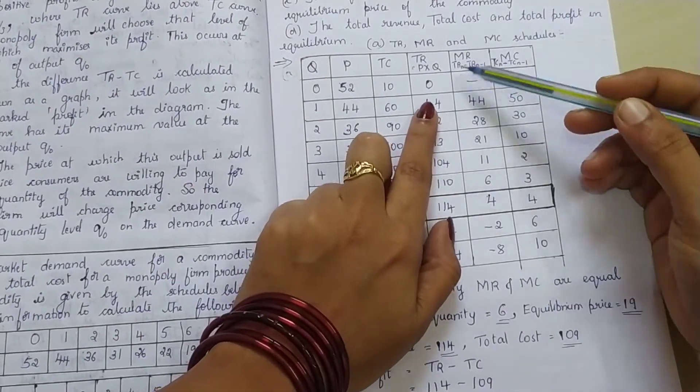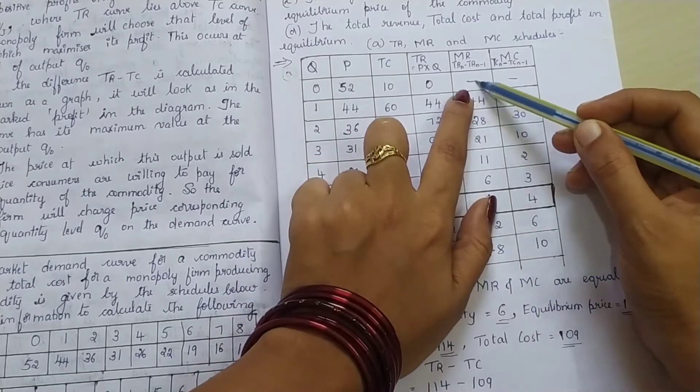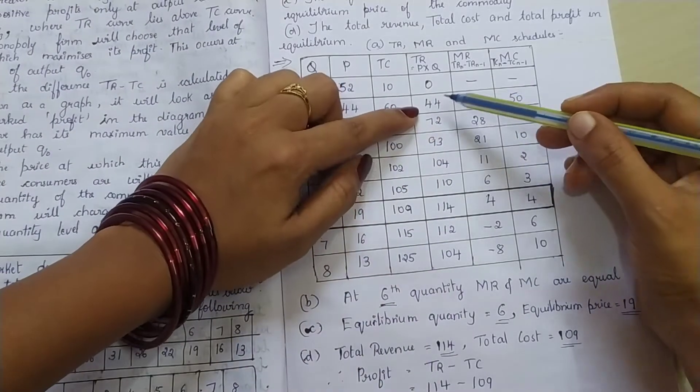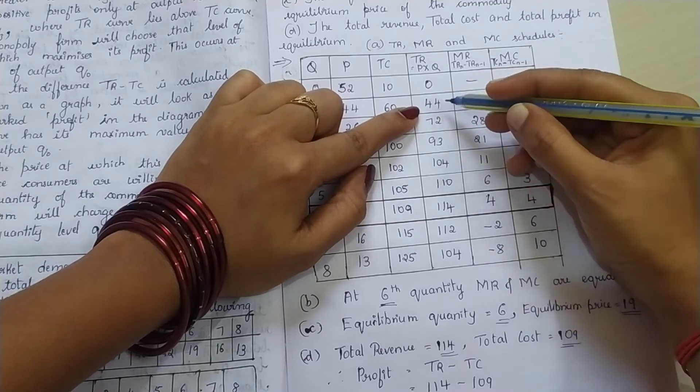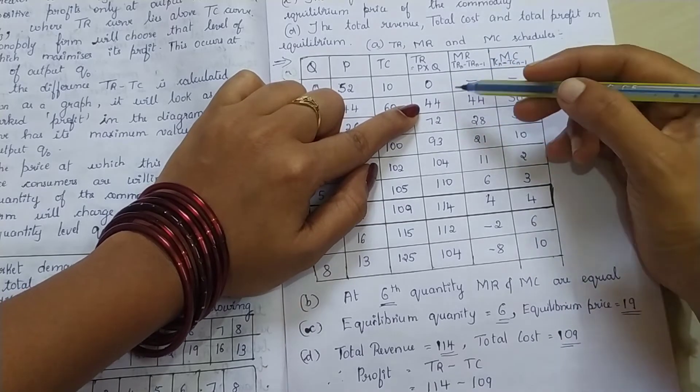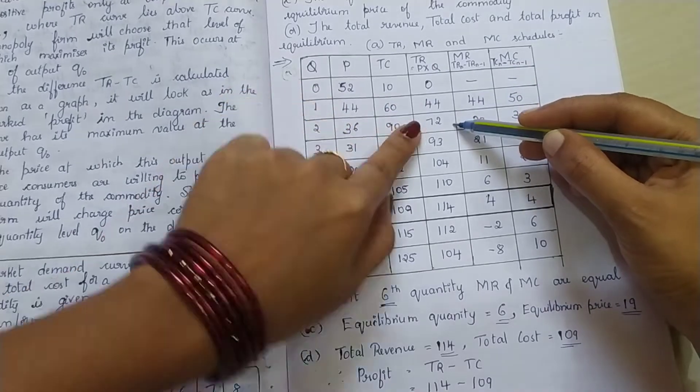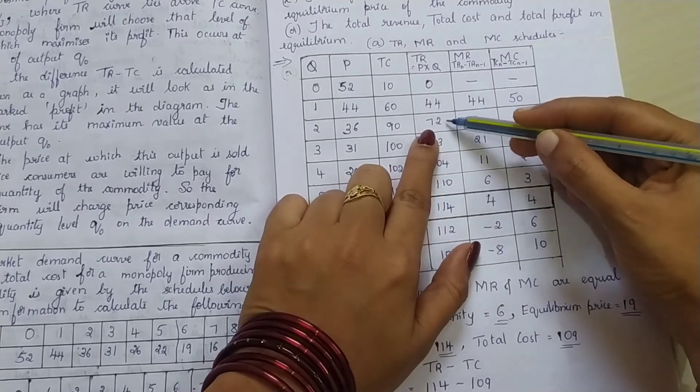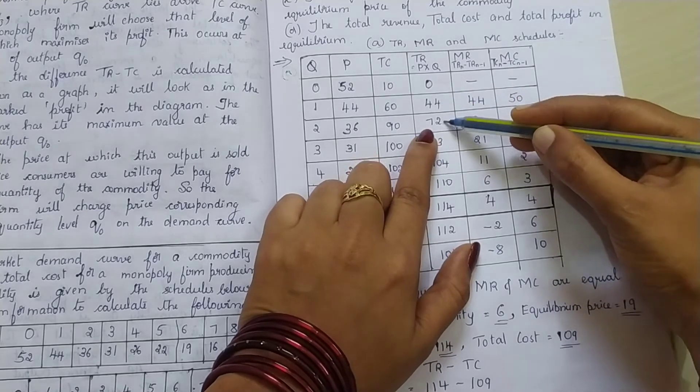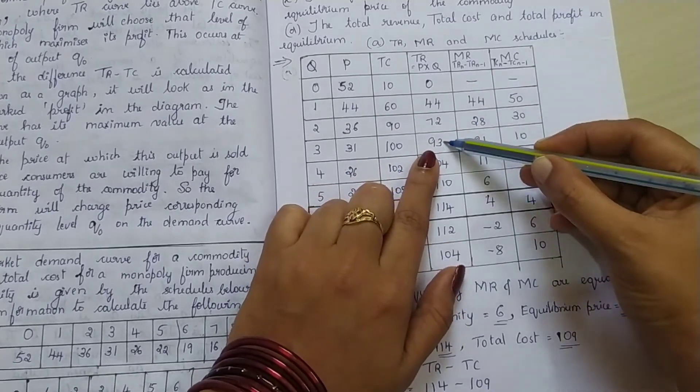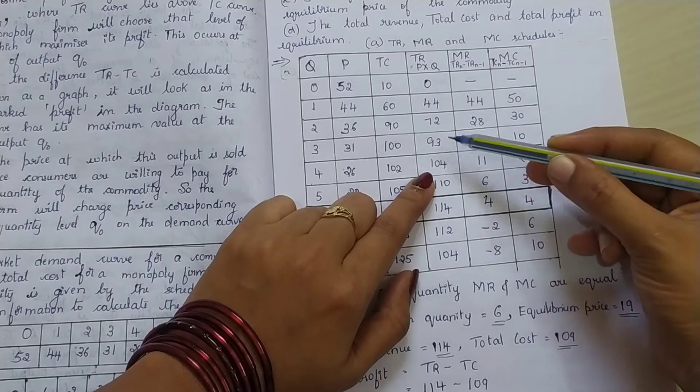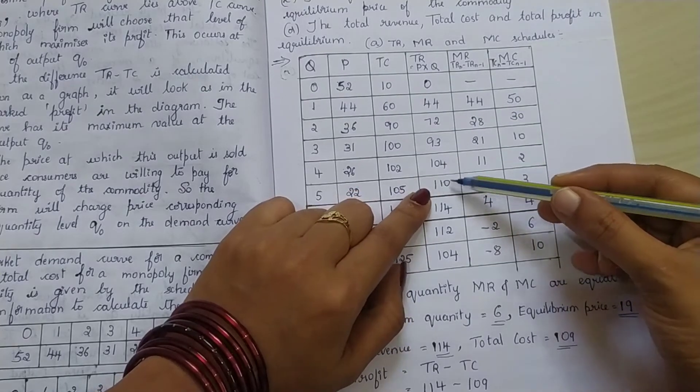Marginal revenue is calculated as TR of nth unit minus TR of n minus 1. So, first value is always nil, dash. Next value, how will you calculate? 44. This is TR, total revenue of the nth unit, minus total revenue of n minus 1 - the previous value. So, 44 minus 0 is 44 itself. Next one, for the quantity 2, total revenue of the nth unit is 72, minus the previous value. 72 minus 44 is 28. Similarly, for the next one, 93 minus 72, 21. Next one, 104 minus 93. This value minus the previous value. So answer is 11. Next one, 110 minus the previous value 104, that is 6.